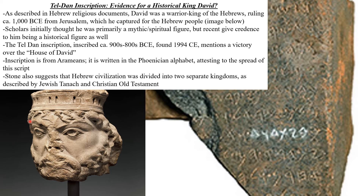Here is part of a bust of King David, although this bust was probably made long after he would have existed. Scholars initially thought that David was a mythic or spiritual figure, but recent discoveries have given credence to the idea that David may have been a historical figure as well. The Tel Dan inscription from about the 900s to 800 BCE, found around the year 1994 CE, mentions a victory over the house of David by another people group in the ancient Near East.